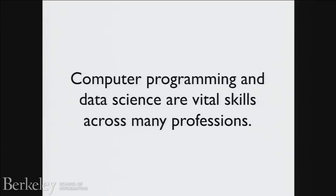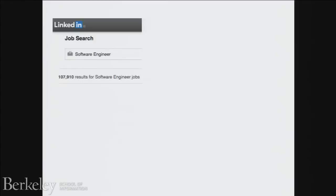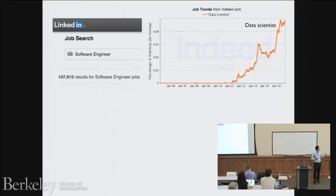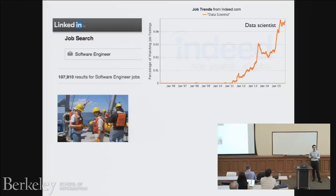Computer programming and data science are now vital skills across a ton of professions. The most obvious type are software engineering jobs — happening everywhere around the world. Data science is an increasingly important job role. Over the past five years, the role of data scientists has really been formalizing in companies, even though people have been doing data science-like work for many years.